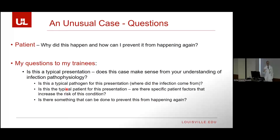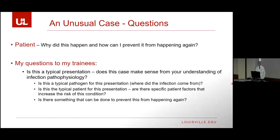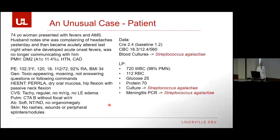My questions to trainees are: is this a typical presentation? Does this make sense from what you understand about infection pathophysiology? Is this a typical pathogen, and where does it normally live? Is this a typical patient — are there specific patient factors that increase the risk? And is there something we can do to prevent this from happening again? Looking back at this case through the lens of the patient, the risk factors I can identify are her age, her diabetes, particularly her relatively poorly controlled diabetes with an A1c of 11.4%, and her BMI.